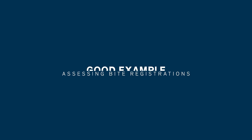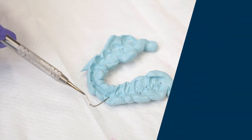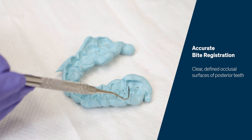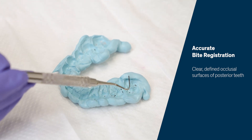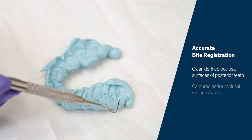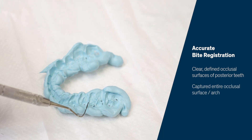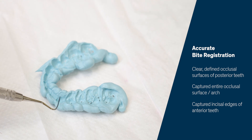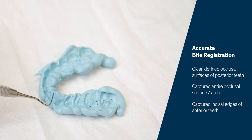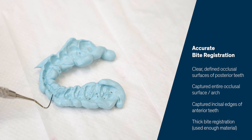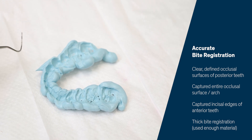This is an example of an accurate bite registration. We can see very clear, defined occlusal surfaces of the posterior teeth, and we have captured the entire occlusal surface. We've also captured the incisal edges of the anterior teeth, and the bite registration is thick enough to maintain integrity during the shipping process.